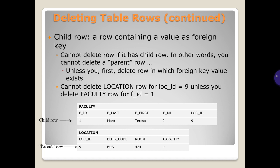Deleting table rows continued. Child row: a row containing a value as foreign key. Cannot delete row if it has child row. In other words, you cannot delete a parent row unless you first delete row in which foreign key value exists. Cannot delete location row for LOC_ID unless you delete facility row from F_ID.